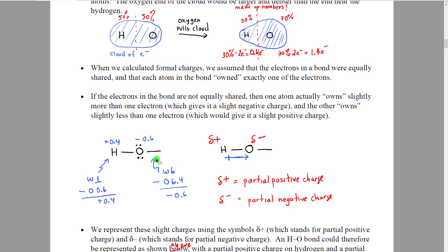On the oxygen side, the oxygen wants 6 electrons. In this case it's going to own 5 electrons — 2 from one lone pair, 2 from the other, 1 for one bond — and then for this oxygen-to-hydrogen bond it would actually own 1.4 electrons. That adds up to 5 plus 1.4, giving 6.4 electrons. When we subtract, that gives oxygen a negative 0.4 charge.